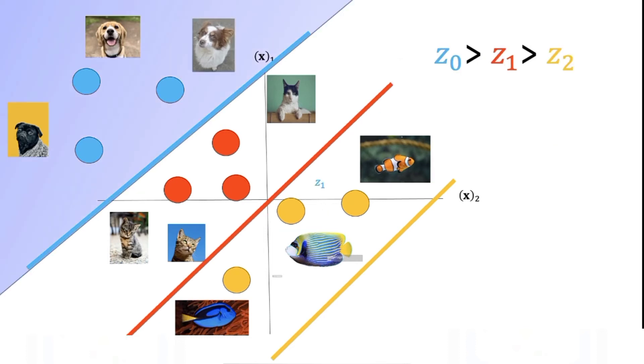If the input is in the blue region the value of z0 corresponding to the equation 0 is the largest. This is where the blue plane has a higher value than the other regions. Therefore anything in this region will be in class 0.